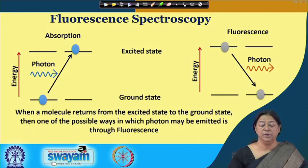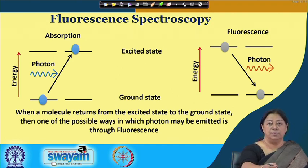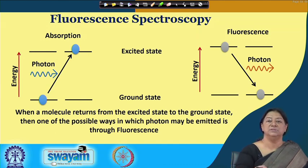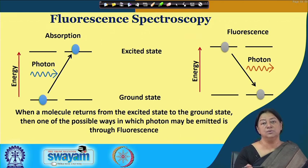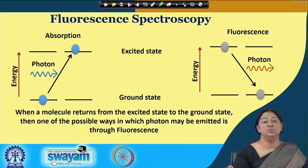When we come to fluorescence spectroscopy, so far we have been talking about the absorbance of light. When light is absorbed and the molecule is in the excited state, it is going to lose this energy. It can lose energy either by a non-radiative path or a radiative path. If it is a radiative path, it means it emits light — this happens when we have fluorescence, and also when we have phosphorescence.